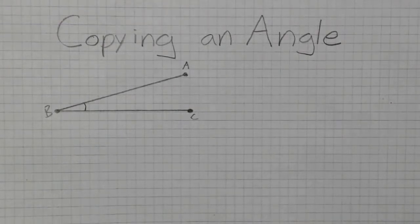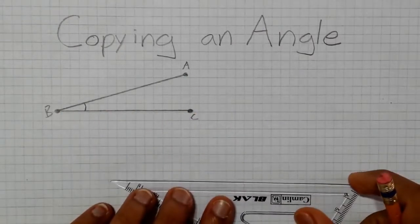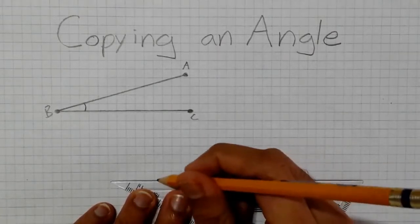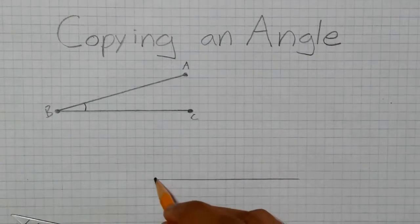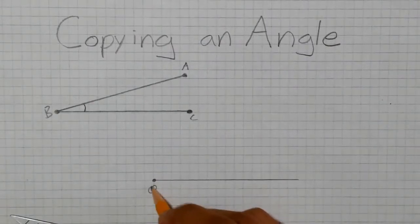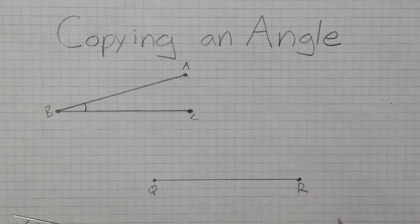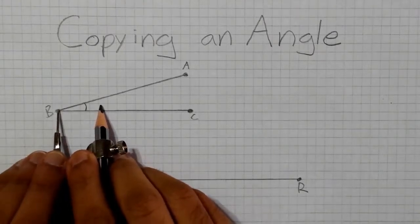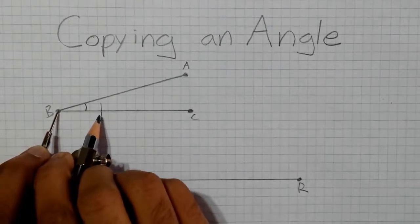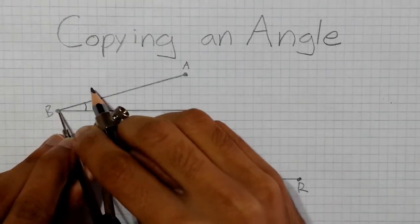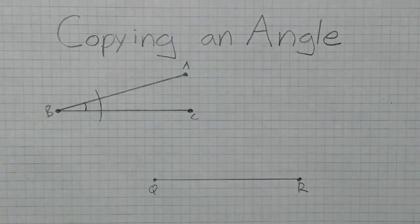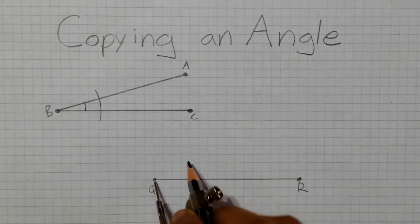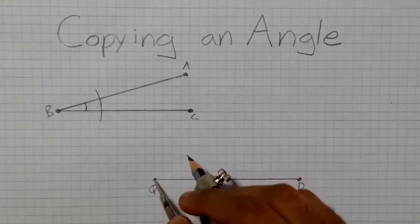Copying an Angle. To copy angle ABC, we first have to decide where we're going to start the second angle. We'll draw another line segment and label it QR. Then we'll take the compass and draw two arcs on our original angle across BC and BA. Then, using the same distance of the compass, place the tip on point Q and make a large arc across the new line segment.